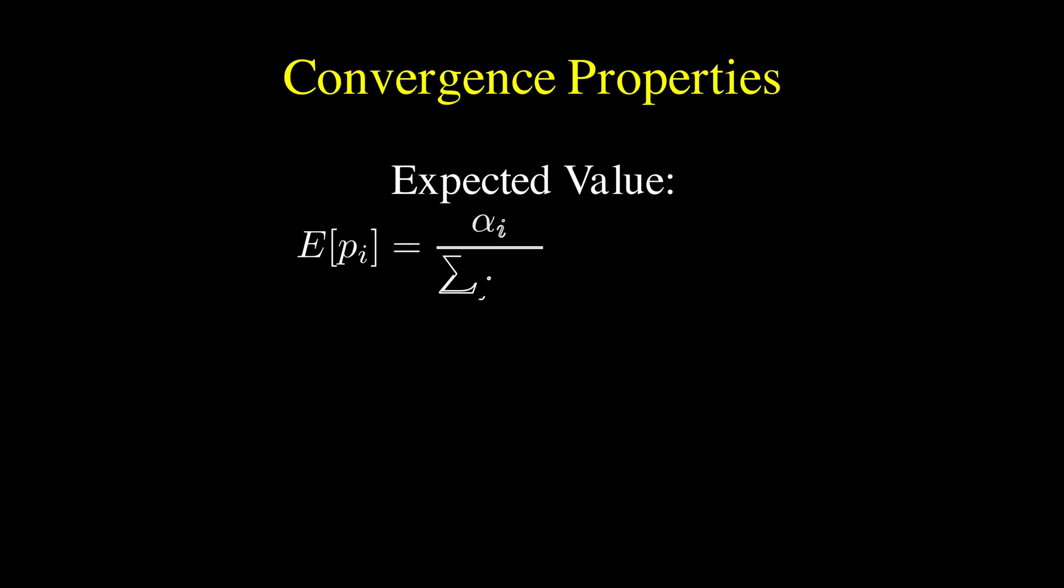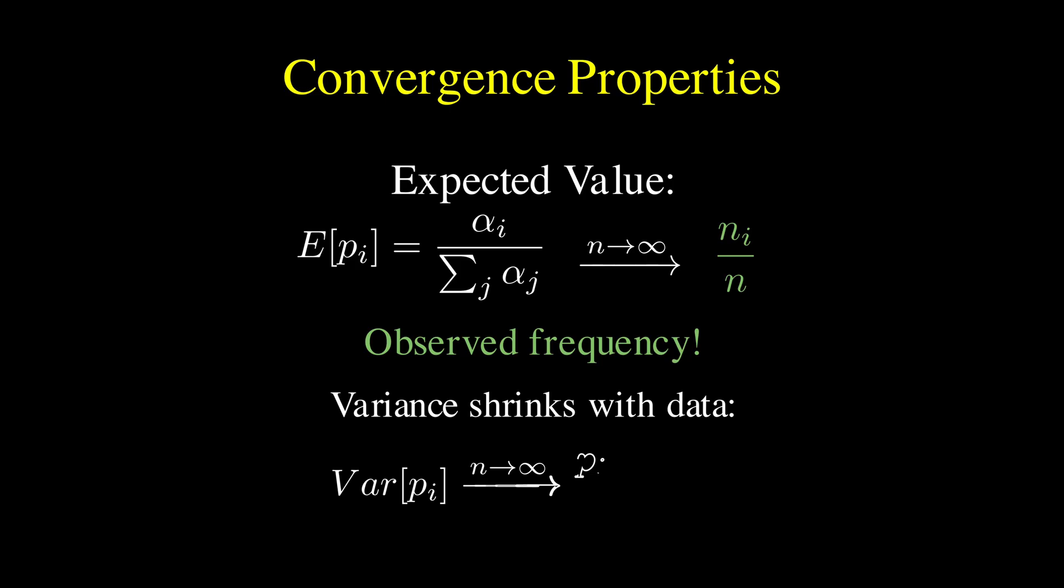What makes the Dirichlet distribution particularly elegant is how it behaves as you collect more data. The expected value of each probability in your vector converges to exactly what you'd expect, the observed frequency in your data. The variance of each probability also behaves beautifully, starting relatively large when you have little data and shrinking as you collect more observations, eventually converging to the familiar formula p times 1 minus p divided by n, which is exactly what you'd expect from basic statistics.